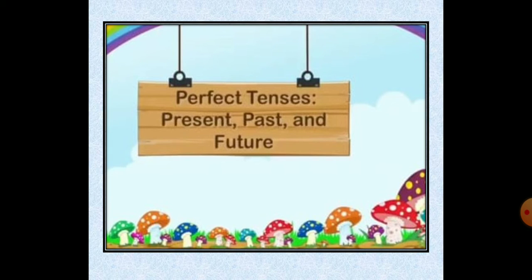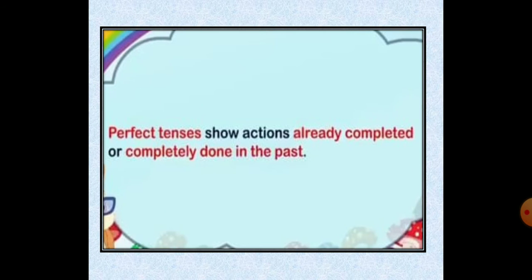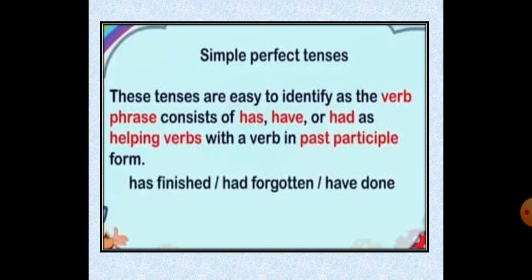Now come to the another topic: Perfect Tense — present, past and future. Perfect tense shows actions already completed or completely done. Perfect tense mein jab koi action already complete ho chuki hai — ya past mein complete ho chuki hai, ya abhi bhi complete ho chuki hai — usko perfect tense bolenge. These tenses are easy to identify as the verb phrase consists of has, have or had as helping verbs.